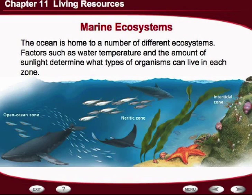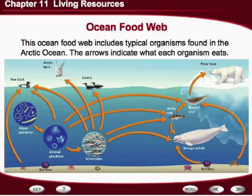The ocean food web is as diverse and complicated as the life that lives in the ocean. This ocean food web includes typical organisms found in the Arctic Ocean. The arrows indicate what organism each eats. If you take a look here, you can find one common organism that is the beginning of the food chain — the organism that takes the energy from the sun and brings it into this ecosystem. Look carefully and see if you can determine what organism that is.